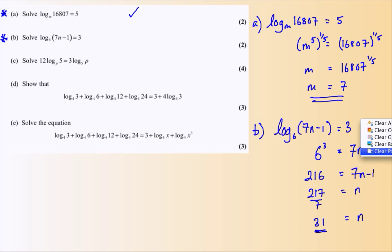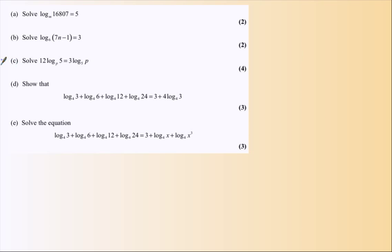Let me clear this off and we'll get on with C, which is a slightly more involved looking thing. Now this is a problem where we have different bases being used. Logarithm bases can be changed, and we need a rule for this. To change logarithm bases we have, if we've got log base A of B,